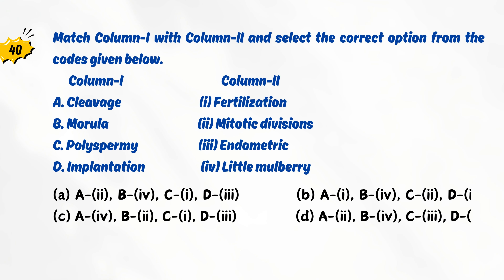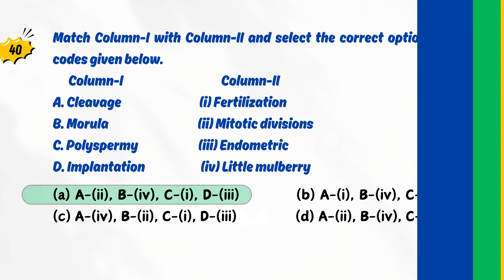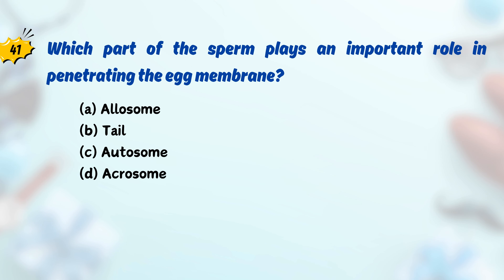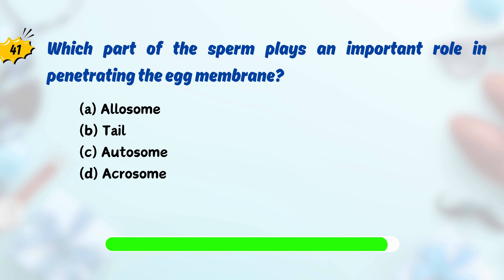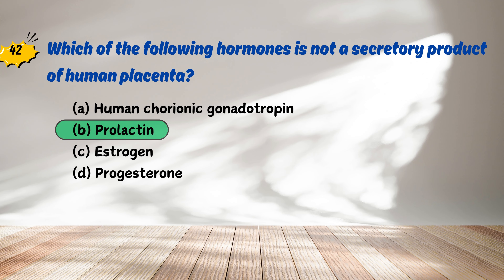Match column one with column two and select the correct option from the codes given below. Which part of the sperm plays an important role in penetrating the egg membrane? Which of the following hormones is not a secretory product of human placenta?